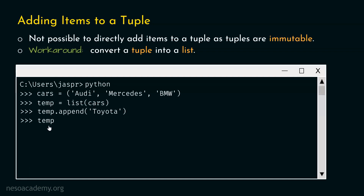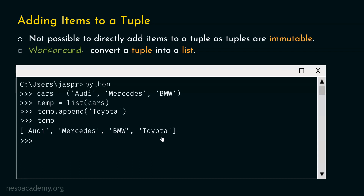We will type temp and hit enter again. We are getting this list with four items: Audi, Mercedes, BMW, and Toyota. We now have this item in our list. The next step is to convert this list back to a tuple.